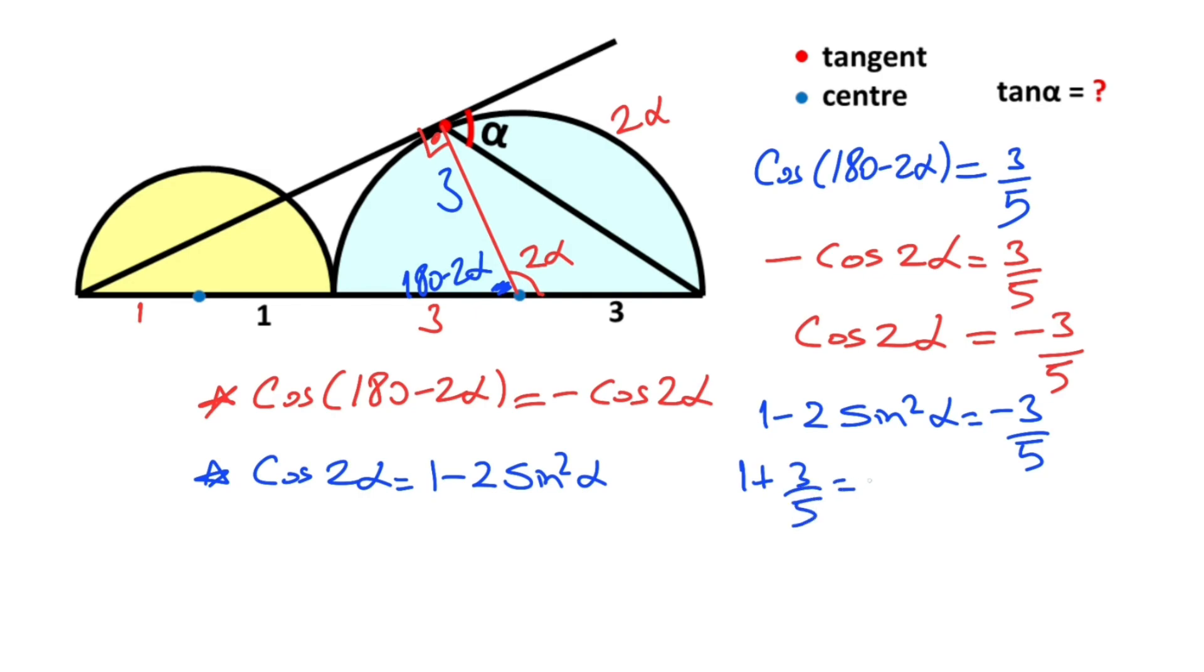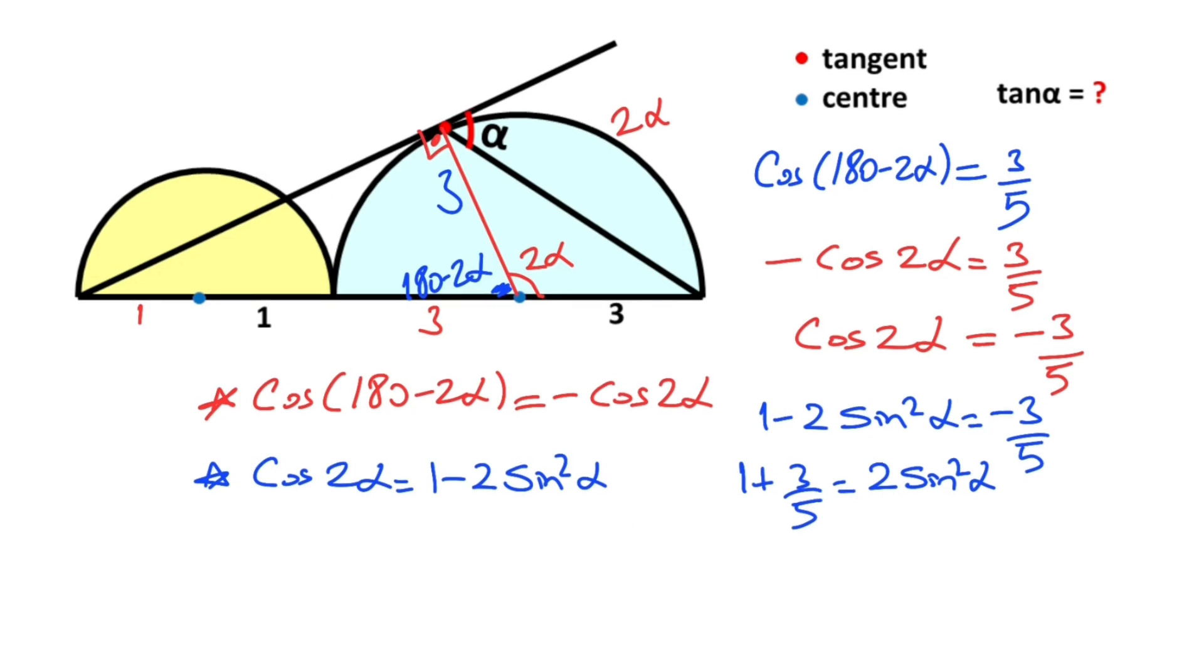Therefore, 1 + 3/5 equals 2sin²α. So 5 + 3 over 5 equals 2sin²α. That means 8/5 equals 2sin²α. Let's simplify, so sin²α equals 4/5.